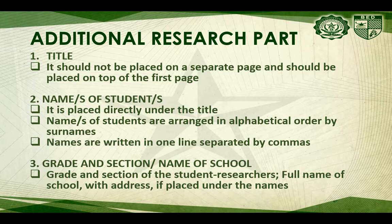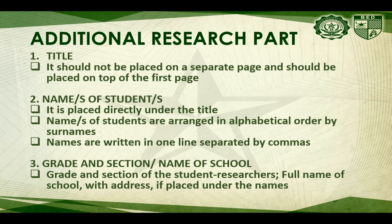For the additional research part, the title should not be placed on a separate page and should be placed on top of the first page. The names of the students must be placed directly under the title. Names are arranged in alphabetical order by surnames, written in one line separated by commas. Grade, section, and name of school of the student researchers must be in full name with address, placed under the names.